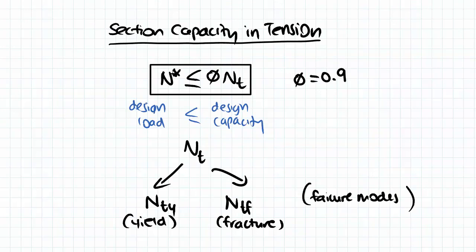Now the basis of this section capacity in tension is that we have to try to find a design capacity such that it is greater or equal to the design load. You see that our design capacity is actually reduced by a factor of 0.9, and this is from the Australian standards.